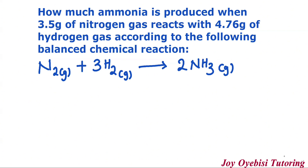So this question says: how much ammonia is produced when 3.5 grams of nitrogen gas reacts with 4.76 grams of hydrogen gas according to the following balanced chemical reaction? To solve this type of question, the first thing you have to figure out is which of these reactants is your limiting reactant, because a limiting reactant will limit the amount of products that will be produced.